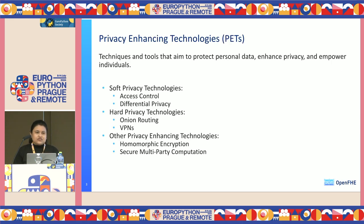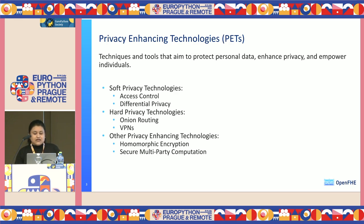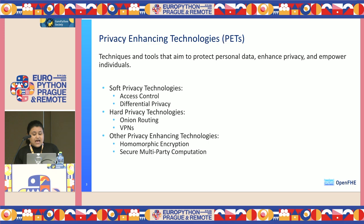This topic falls under the umbrella of privacy enhancing technologies. As software developers, we have been pursuing privacy enhancing technologies in various forms — some of them like access control and differential privacy adding noise to data. Harder privacy technologies include onion routing, VPNs, and now homomorphic encryption and full homomorphic encryption, as well as secure multi-party computation.